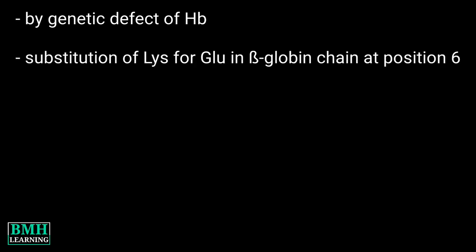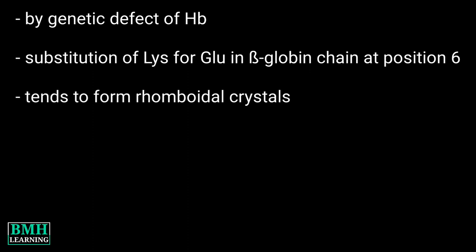The cause is a substitution of lysine for glutamic acid in the beta-globin chain at position 6. HBC tends to form rhomboidal crystals.